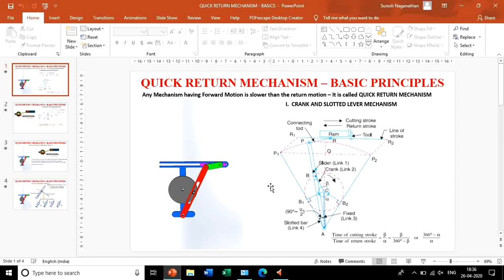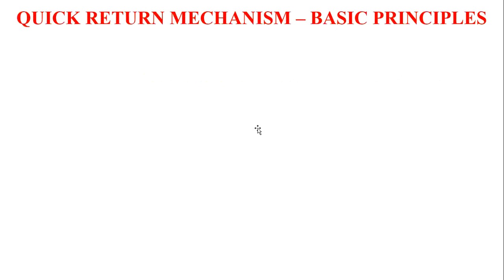Hello viewers. In this class, we will look upon a new mechanism called Quick Return Mechanism. The Quick Return Mechanism is a mechanism which will have a slower forward movement and faster return movement. Since it is returning with a faster rate when compared to forward movement, it is named as Quick Return Mechanism.